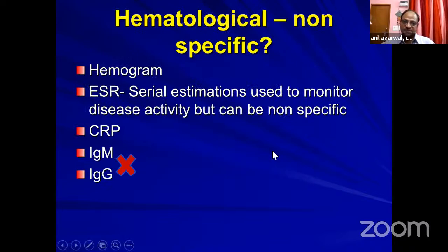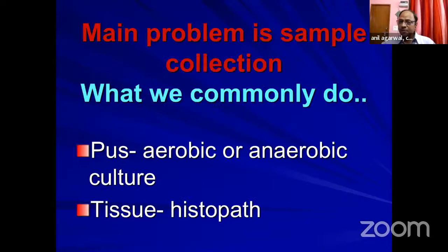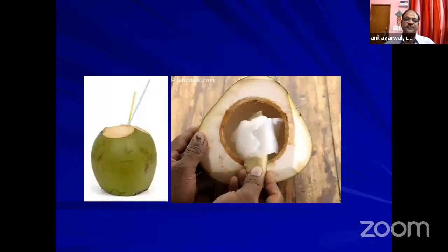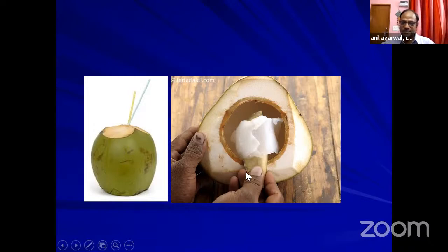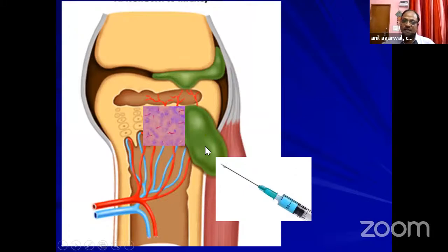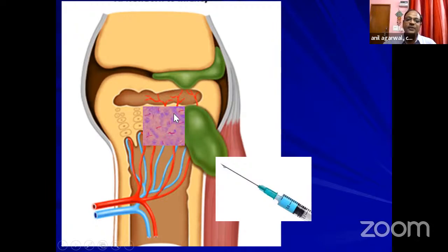ESR can be used to monitor disease activity when it was raised initially. The main problem is sample collection. When you aspirate from the center of an abscess — like the Naryal Pani analogy, where the center is necrotic tissue and the Malai is near the edges — and send it for aerobic/anaerobic culture, yield is low. The tubercular bacterium is a sort of 'royal bacterium' that likes to live near blood vessels. Unless you take tissue from the edge, you are most likely to miss it.